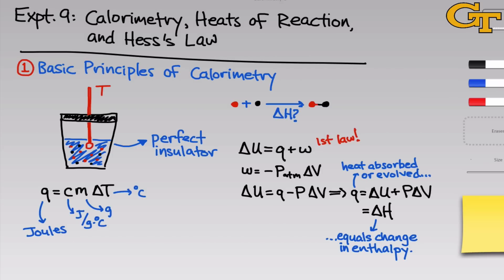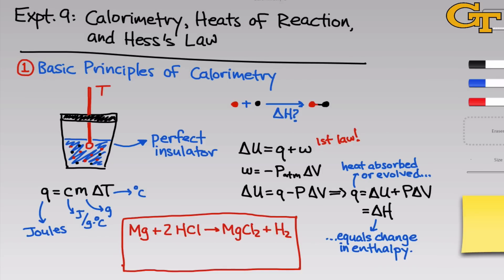Using Q equals C times M times delta T, we can use the delta T of the water bath to calculate Q. This amount of heat is the negative of the heat released or absorbed by the reaction, since all of the heat released by the reaction must be absorbed by the surrounding water bath. For our experiment in particular, one of the reactions we'll study is one mole of magnesium metal reacting with two moles of hydrochloric acid to form magnesium chloride and hydrogen gas. The reaction will take place inside of a water bath within a calorimeter, allowing us to relate the heat absorbed or released by the water bath to the delta H of the reaction occurring within that bath.